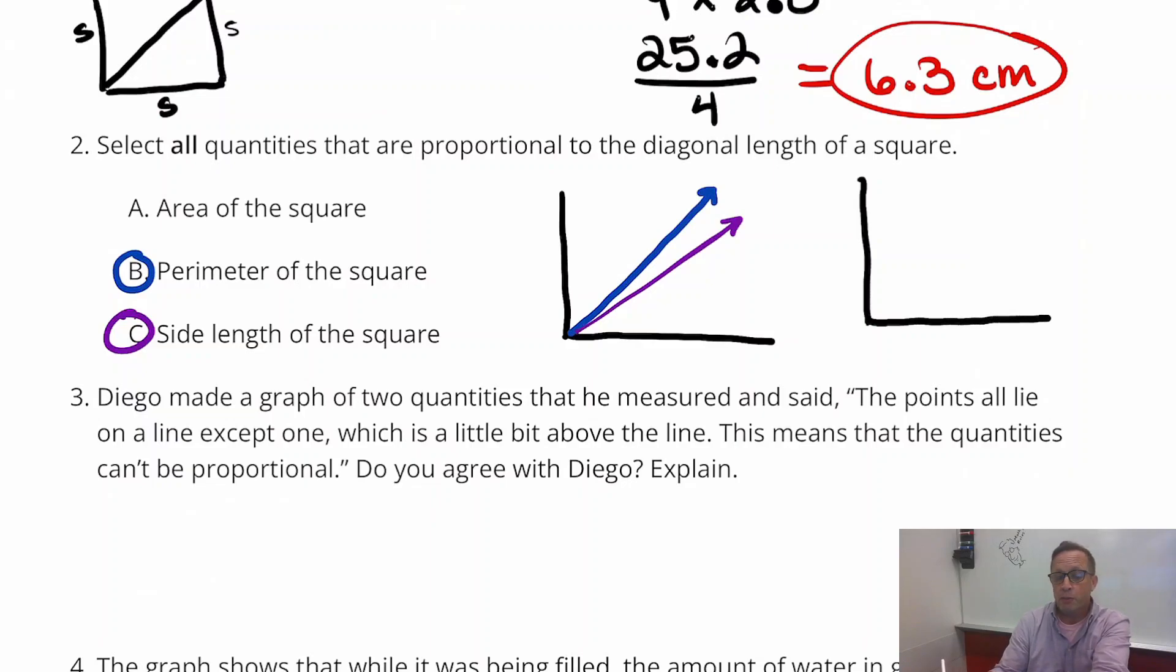Because when you're doing area of the square especially, you're squaring things. 2 squared is 4, 3 squared is 9, 4 squared is 16, 5 squared is 25. That is not a proportional relationship.